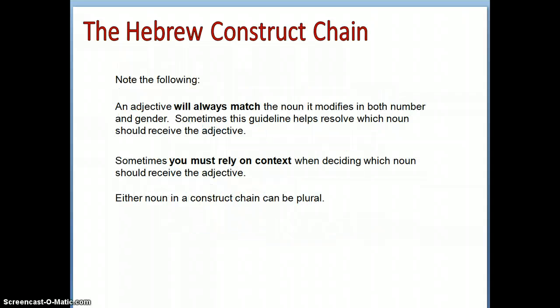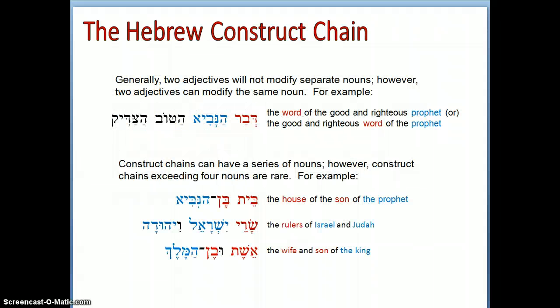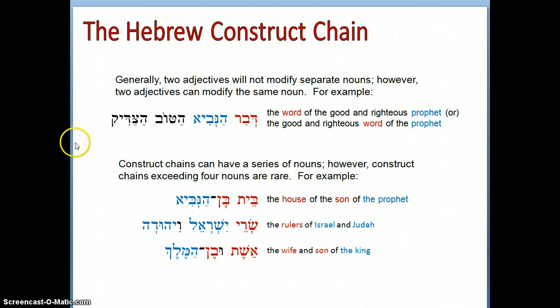An adjective will always match the noun it modifies in both number and gender. Sometimes this guideline helps resolve which noun should receive the adjective; sometimes you must rely on context. Either noun in a construct chain can be plural. Generally, two adjectives will not modify separate nouns, but two adjectives can modify the same noun. For example, 'the words of the good and righteous prophet' — both adjectives follow the construct chain and describe either the prophet or the word.